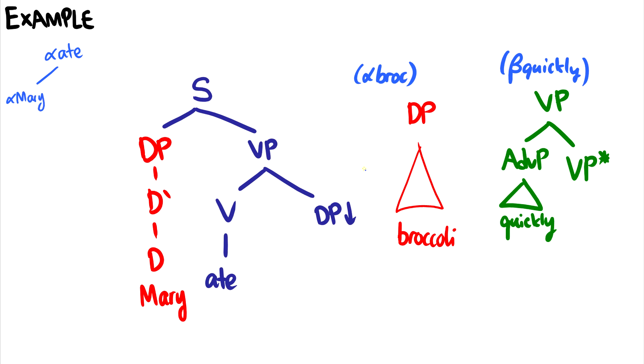Okay, now we're going to put broccoli in for the object position. So let's get rid of that substitution site, put in broccoli by substitution. And now we can say that we put alpha broccoli into the ate tree.